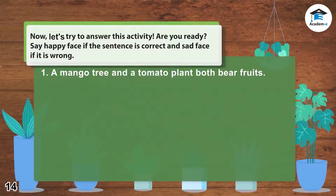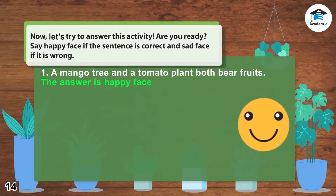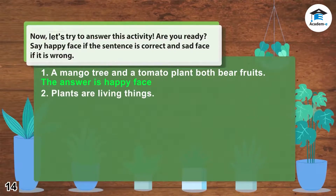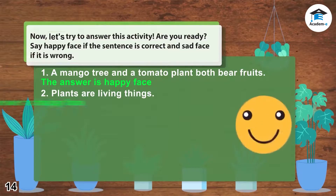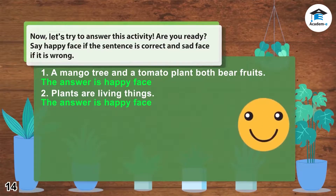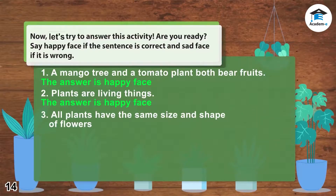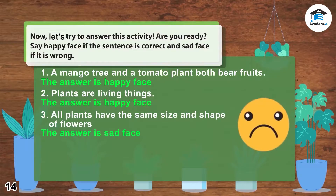1. A mango tree and a tomato plant both bear fruits. The answer is happy face. 2. Plants are living things. The answer is happy face. 3. All plants have the same size and shape of flowers. The answer is sad face.